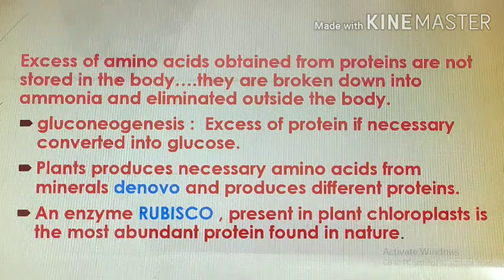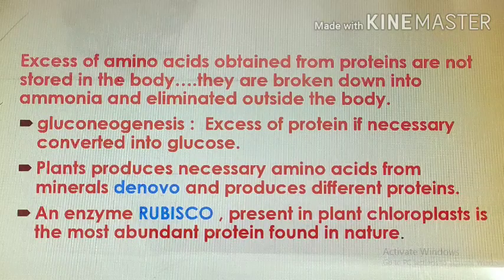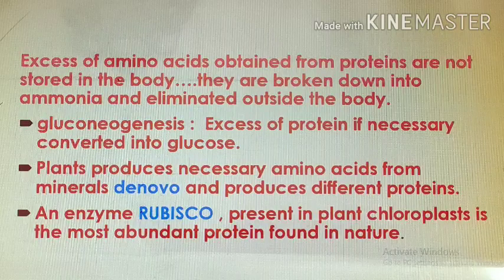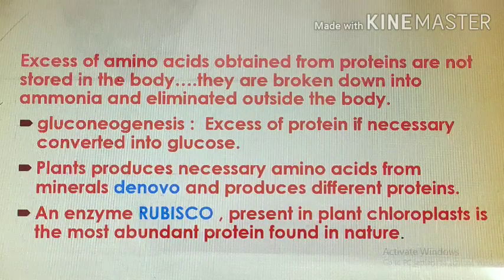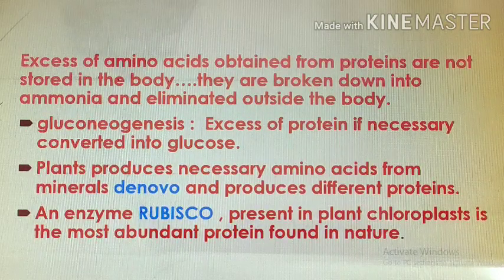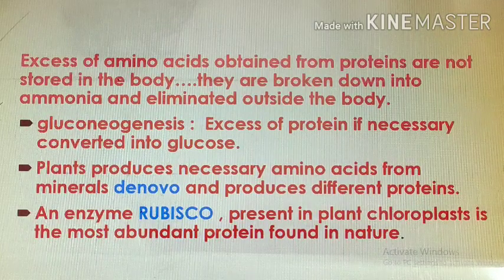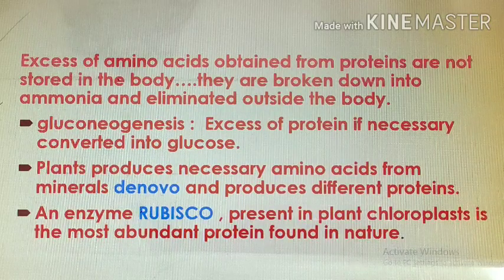If we consume proteins in excess amount, the excess protein after breakdown converts to amino acids, and these amino acids are not stored in the body. These amino acids are again broken down, forming ammonia, which is eliminated outside the body through the urine. Sometimes, if there is a scarcity of carbohydrates in the body, energy production takes place with the help of proteins.